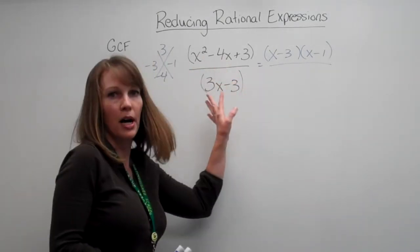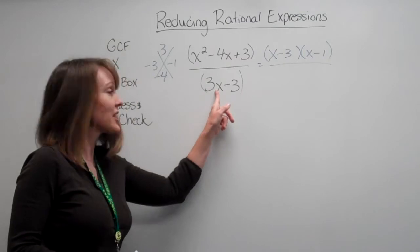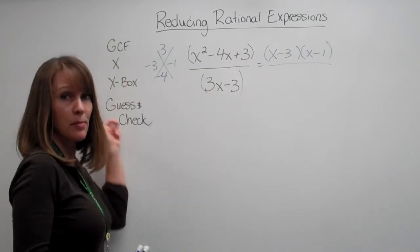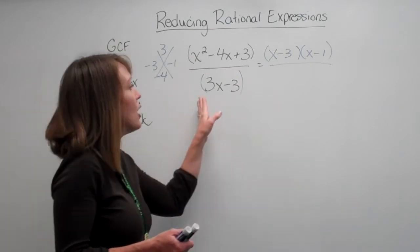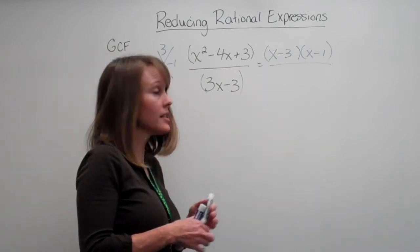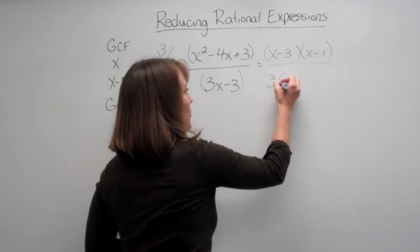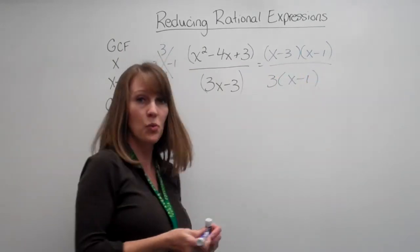So let's take a look at just our bottom here. We don't have an x squared, so it's not going to be the x, the x box, or guess and check. That just leaves greatest common factor. So what can we divide out of both of these? Well, they both divide by three, and our leftovers are x minus one.